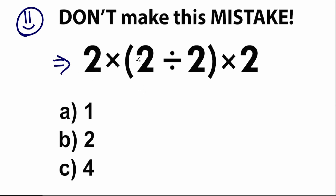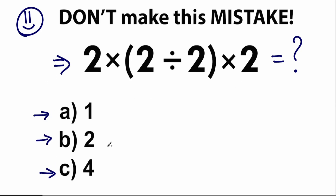We have 2 times 2 divided by 2 inside parentheses, and times 2. So what is the correct answer? I suggest you to pause the video and write your solution down into the comment section. We have three options: option A, option B, option C. Write your full solution and your option down into the comment section.